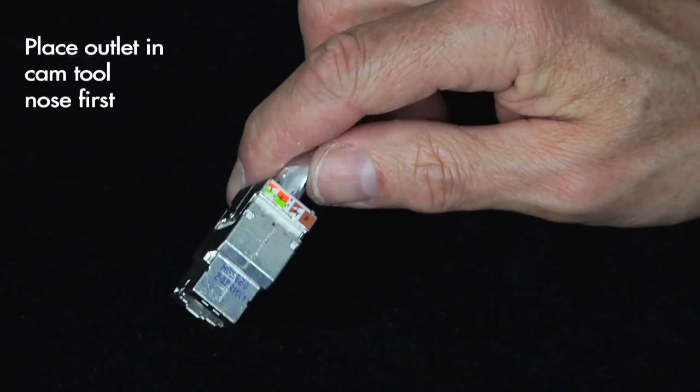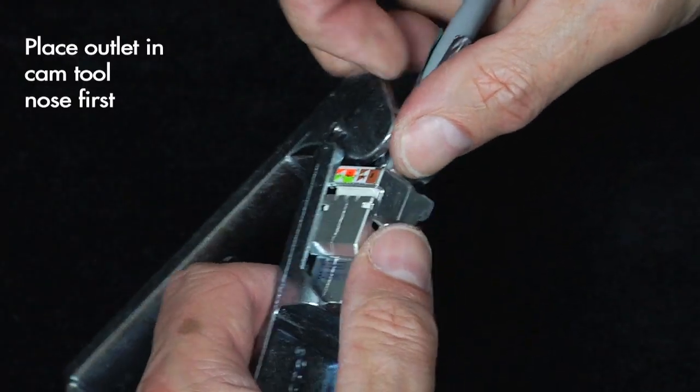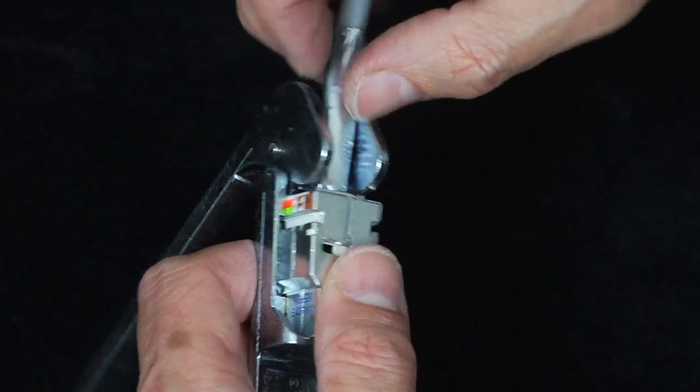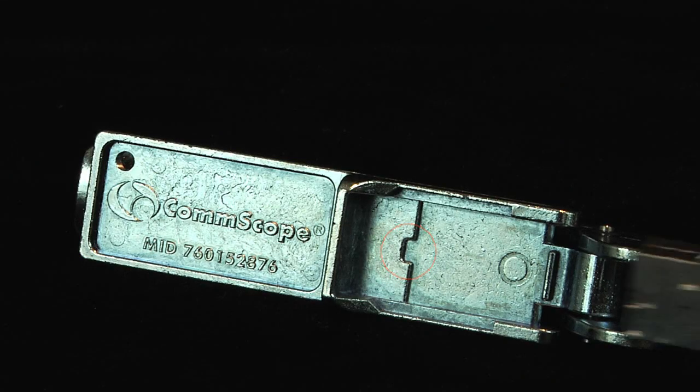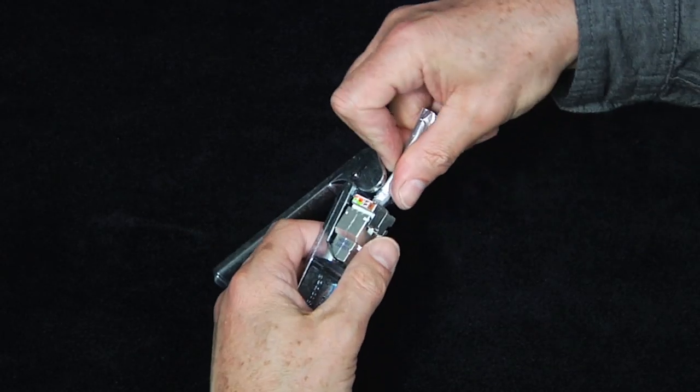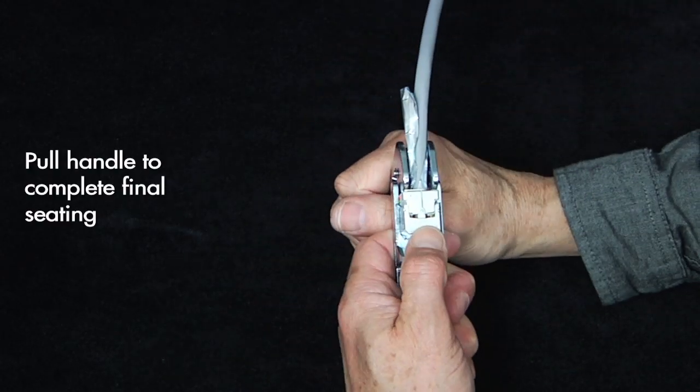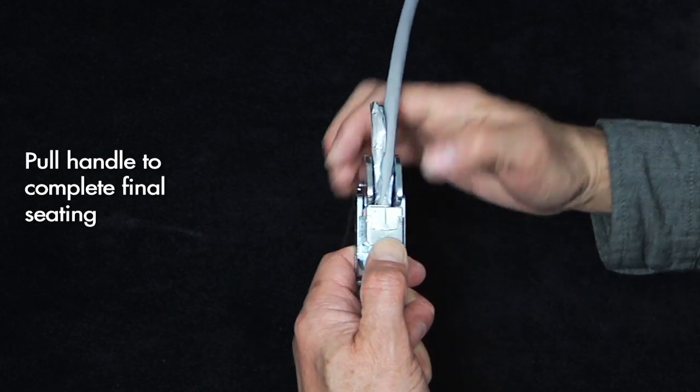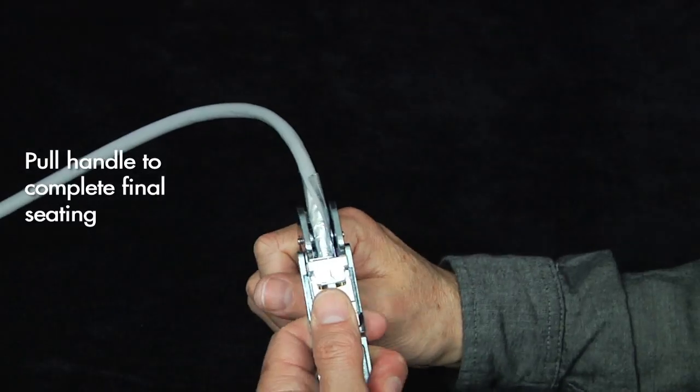Now, place the outlet in the termination cam tool nose first. The termination tool provides a guidance feature to ensure that the termination manager is properly seated in the front housing prior to finalizing the outlet termination. While holding the outlet in the base, pull down on the tool's handle to complete the final seating of the termination manager.